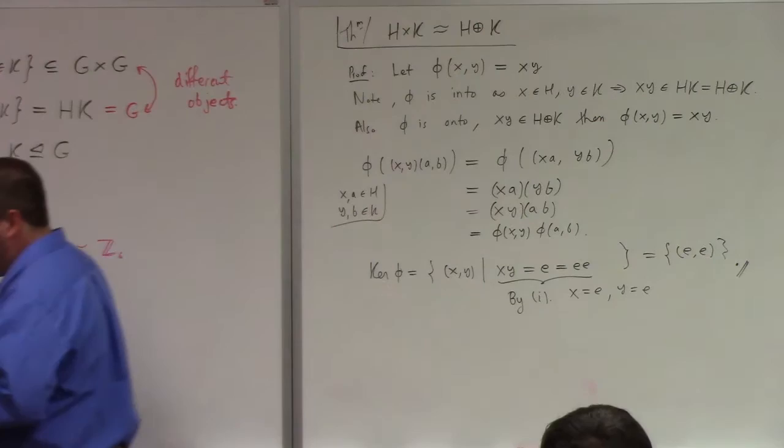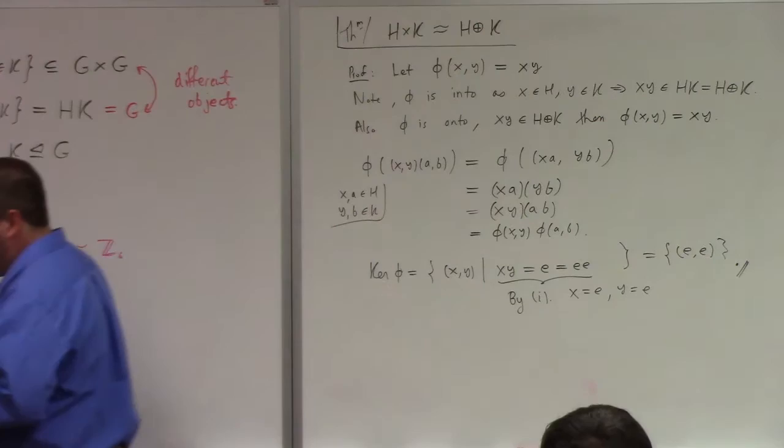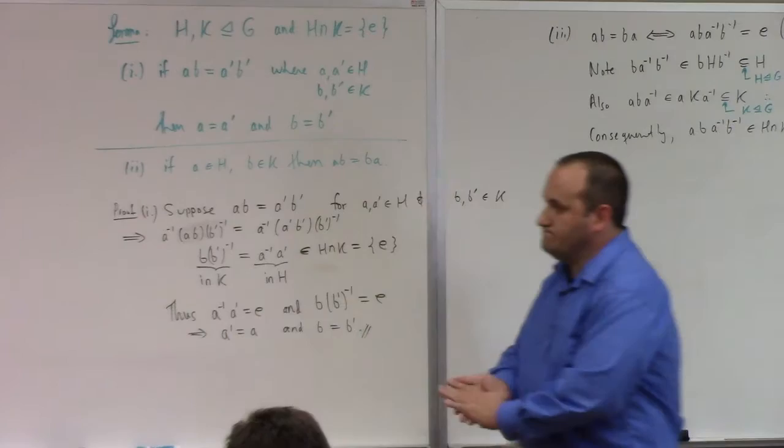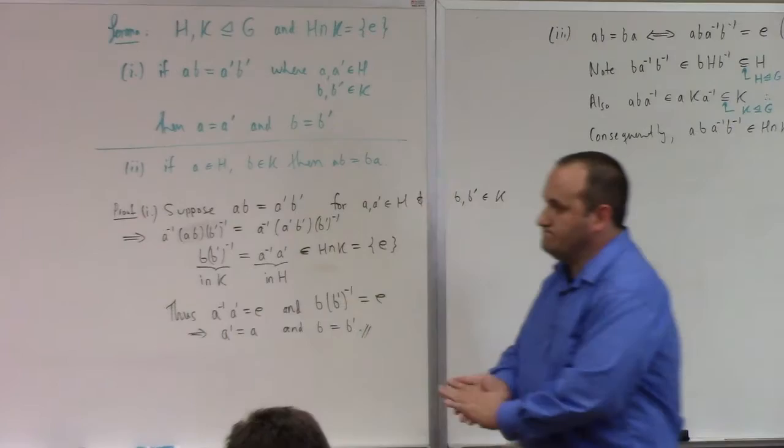Can you go over again how we're allowed to commute those? Part two of the lemma — because one element is from H and the other is from K. That's where we use it.